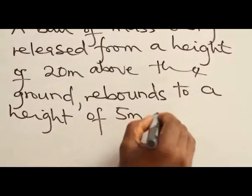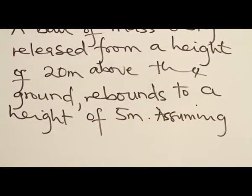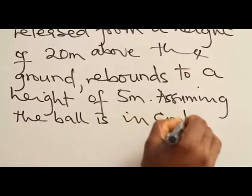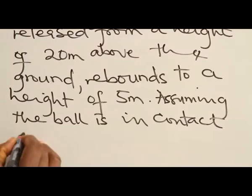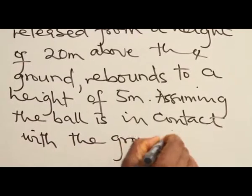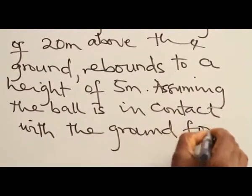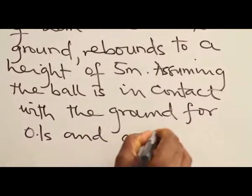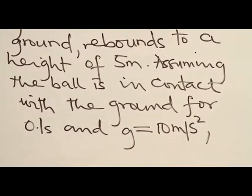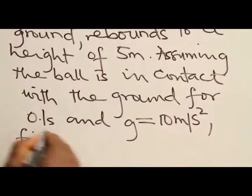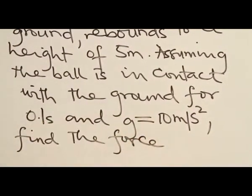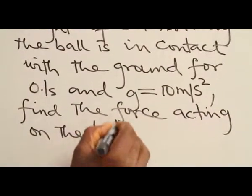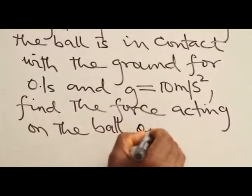Assuming the ball is in contact with the ground for 0.1 second and G, acceleration due to gravity, is 10 meters per second squared, find the force acting on the ball on impact with the ground.